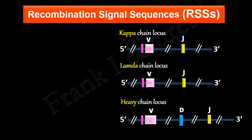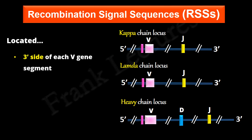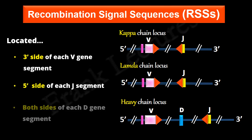Recombination signal sequences are located on the 3' side of each V gene segment, the 5' side of each J gene segment, and on both sides — that is, the 3' and 5' sides — of each D gene segment. Thus, recombination signal sequences are found adjacent to the points at which recombination takes place.